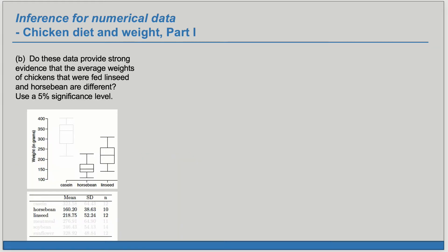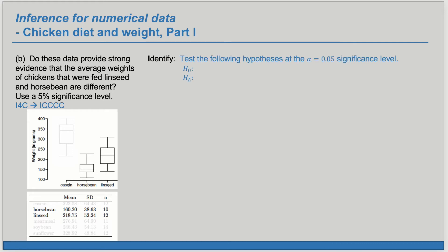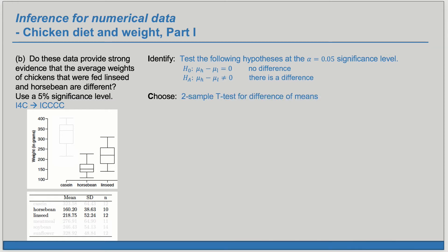Part B: Do these data provide strong evidence that the average weight of chickens that were fed linseed and horse bean are different? Use a 5% significance level. To structure our response, we're going to use I4C — identify, choose, check, calculate, and conclude. First, we identify the hypotheses at a 5% significance level. Our null claim is that the two averages are equal, that mu sub H minus mu sub L equals zero — no difference. Our alternate claim is that the averages are different, that the difference does not equal zero. This is a two-sided alternate hypothesis. We have two samples and we're looking at means, so we're going to do a two-sample t-test for difference of means.